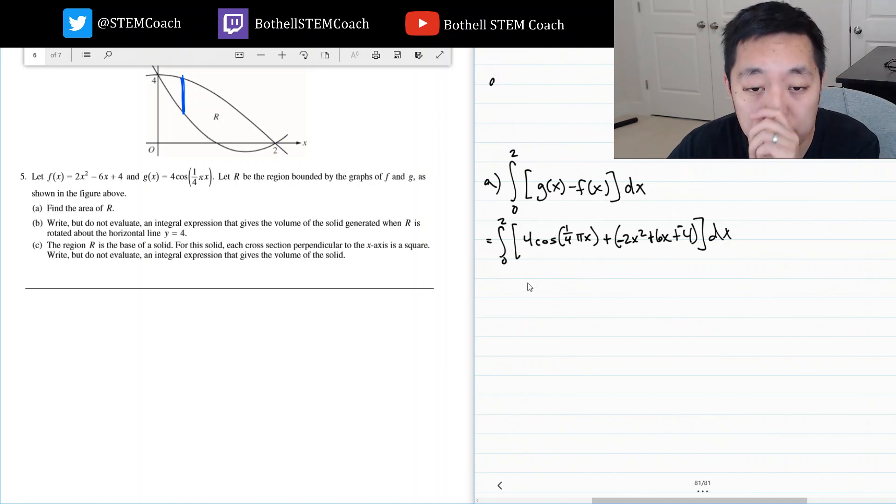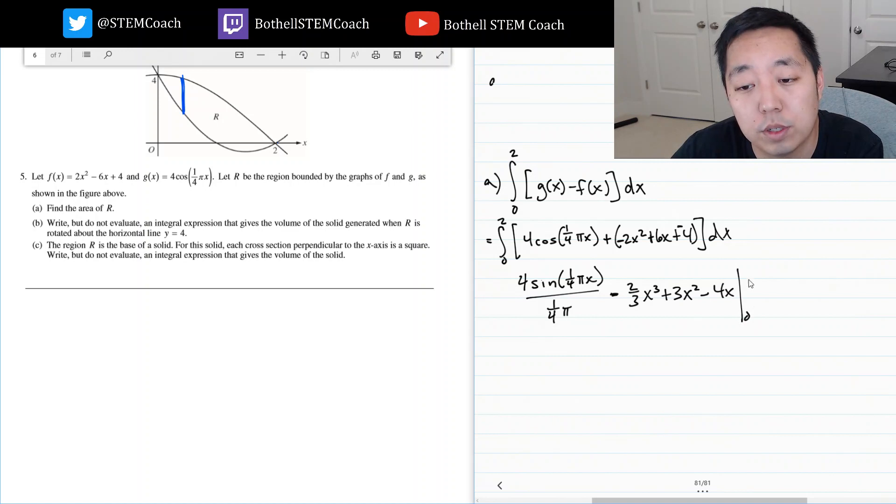So let's do the integral of each one at a time. This one, the integral of cosine is always sine. But because of the kind of backwards chain rule, or if you want to think, I got to divide by 1/4 π. When I take the derivative of this I get that, right? Minus 2/3 x³ plus 3x² minus 4x from 0 to 2.